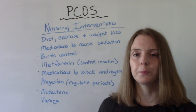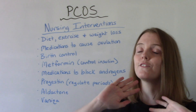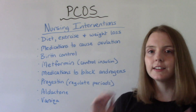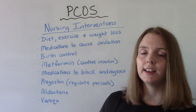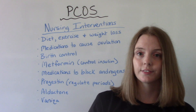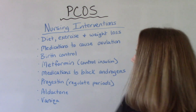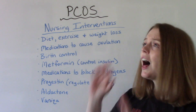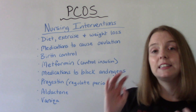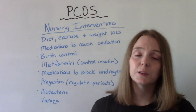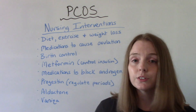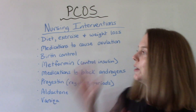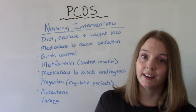For nursing interventions with patients with PCOS, the first line of defense is diet, exercise, and weight loss — that is the first thing recommended after diagnosis. Other options include medications, and a lot of these interventions depend on the age of the patient, whether or not they want to have children, and how severe their symptoms are. It's very individual.